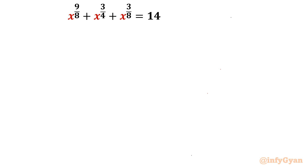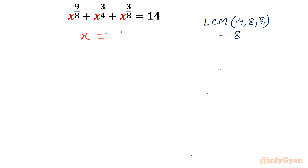Why is this problem special? Because in this problem we will find two substitutions by the conventional method — if you do any manipulation, you will get only one substitution. Before substituting, we have to find out the LCM. The denominators are 4, 8, and 8, so the LCM comes out to 8. Our first substitution is x = t^8.